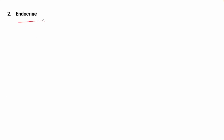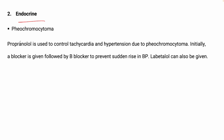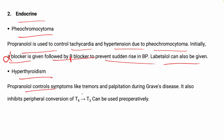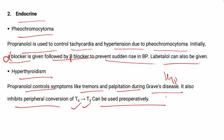For endocrine uses: in pheochromocytoma, propranolol is used to control tachycardia and hypertension. Initially an alpha blocker is given, followed by a beta blocker, to prevent sudden rise in BP. Labetalol can also be given. In hyperthyroidism, propranolol controls symptoms like tremor and palpitation due to Graves' disease and inhibits peripheral conversion of T4 to T3. It can also be used preoperatively.